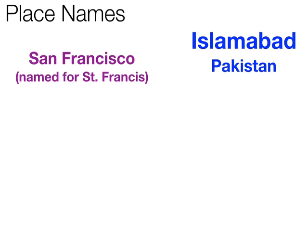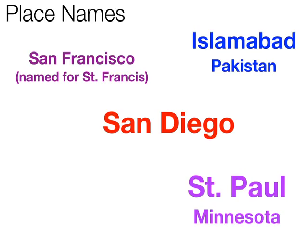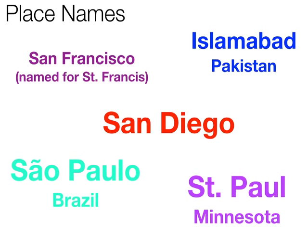Islamabad confirms the importance of religion in everyday life and promotes regional distinctiveness. San Diego is another example, similarly named by Spanish explorers. St. Paul, Minnesota — named for a Catholic saint — was placed by later Western European explorers, and its South American counterpart is São Paulo in Brazil, also named for St. Paul. Through all of these examples, we can see how religiously inspired toponyms promote regional distinctiveness and confirm the importance of religion in everyday life. This concludes the lecture on religion in the cultural landscape.